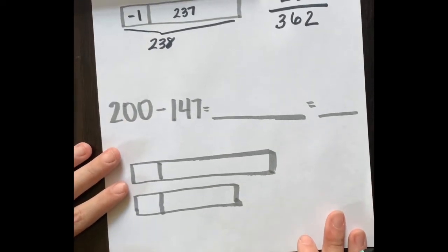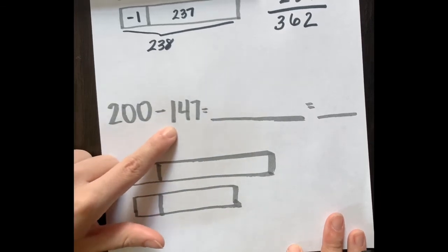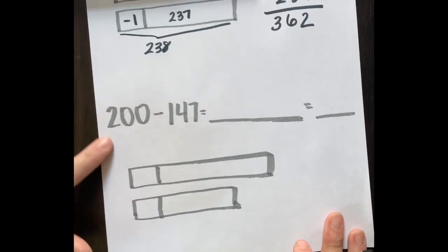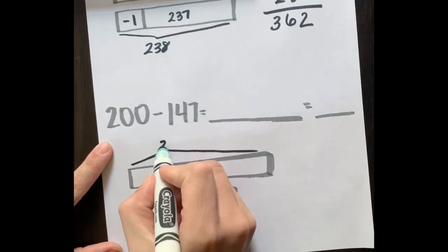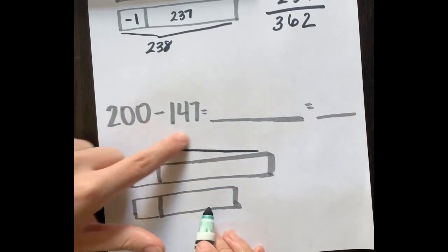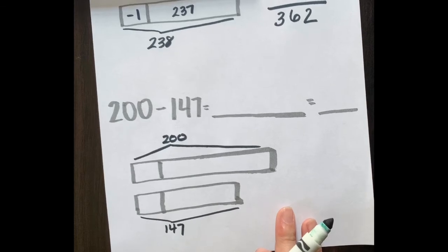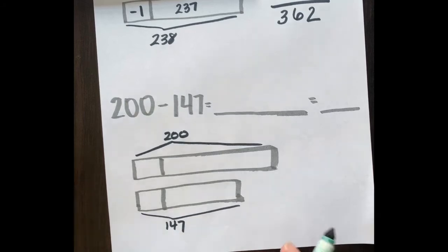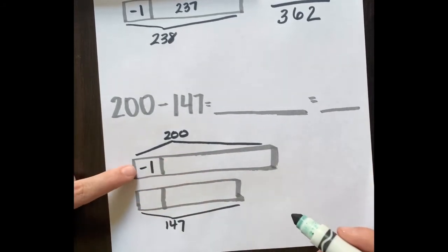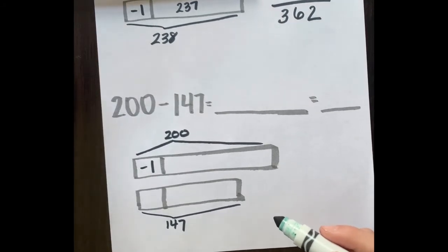Our last problem is 200 minus 147. I'll take the big number, 200, and fill in my longer tape, and my second smaller number, 147, fills in the smaller tape. I want these zeros to be nines, so I'll take away one: 200 counting down one is 199.